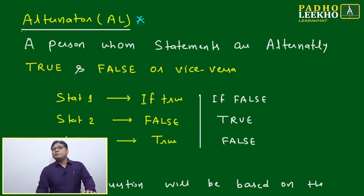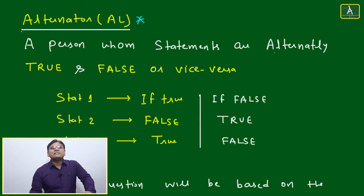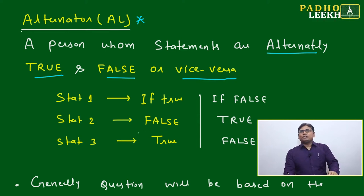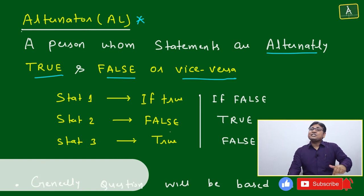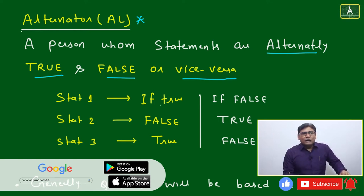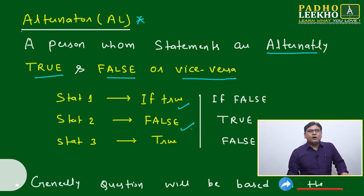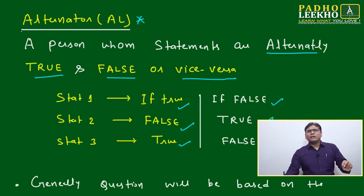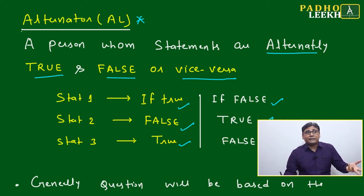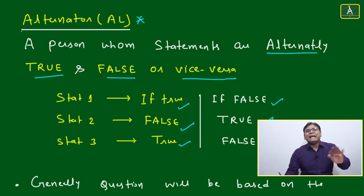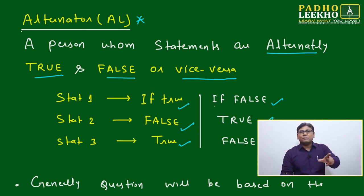The Alternator requires careful attention as it can cause confusion. An Alternator is a person whose statements are alternately true and false. If one statement is true, the next is false, and then true again. The order may start true-false-true or false-true-false, but the alternating pattern is always maintained.